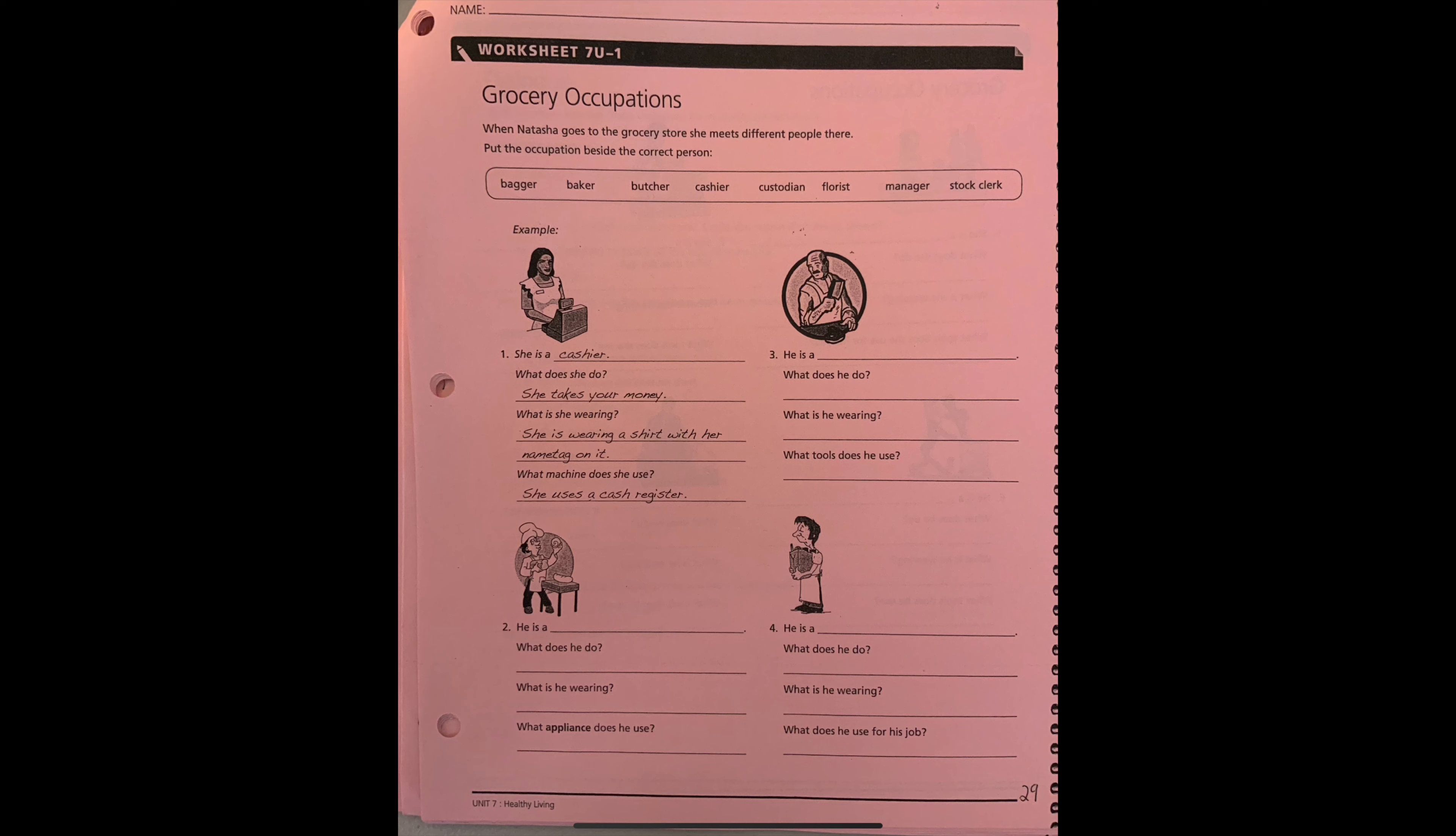So students, these sentences are everyday sentences. When you talk about your job or things that you do every day, you use everyday sentences. So for he or she, don't forget the S. So here you can see an S. She takes your money.